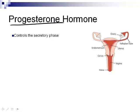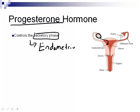Progesterone controls the secretory phase. The progesterone made in the ovary by the follicle targets the endometrium — the site where a developing zygote will attach. For implantation to succeed, the endometrium must be thick, mature, and secretory. Secretory means it must have a lot of blood vessels to supply nutrients to that tissue.